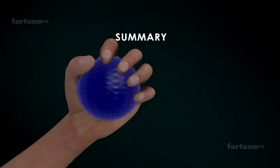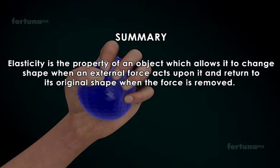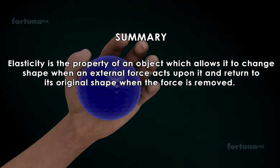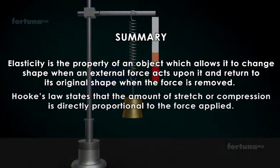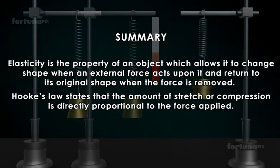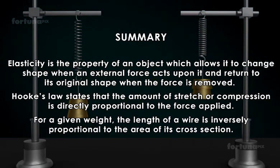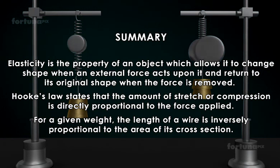Summary: Elasticity is the property of an object which allows it to change shape when an external force acts upon it, and return to its original shape when the force is removed. Hooke's Law states that the amount of stretch or compression is directly proportional to the force applied. For a given weight, the length of a wire is inversely proportional to the area of its cross section.